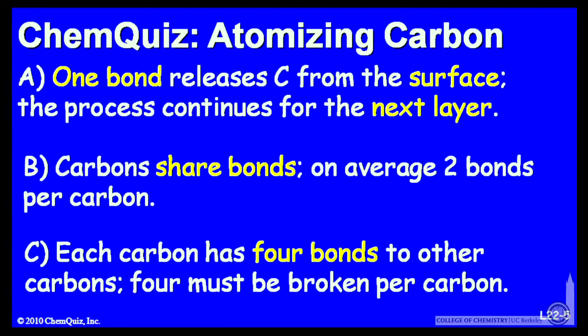Or B, carbons share bonds on an average of two bonds per carbon. Or C, each carbon has four bonds to other carbons. So four must be broken per carbon. Think about that for a minute and make a selection.